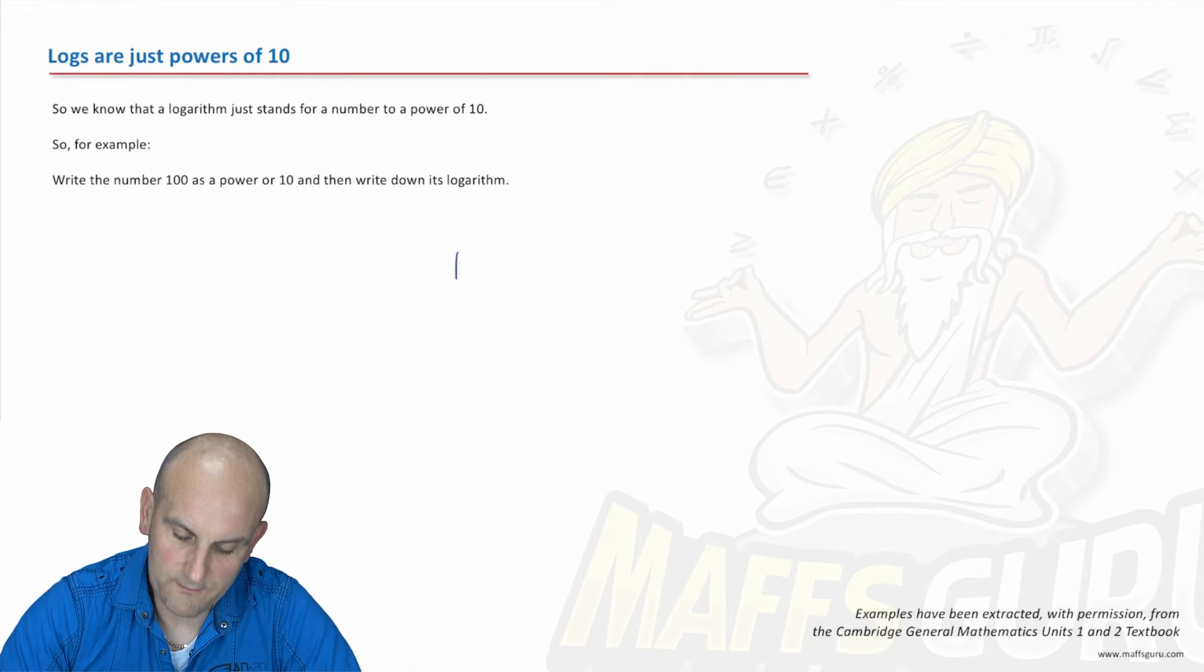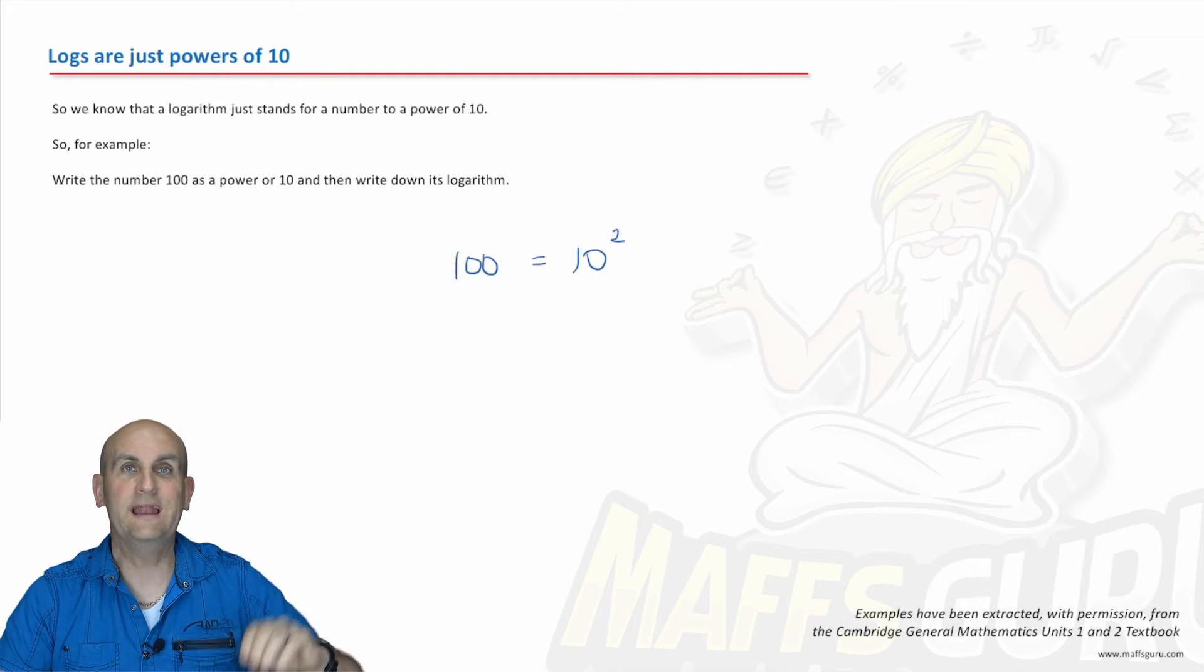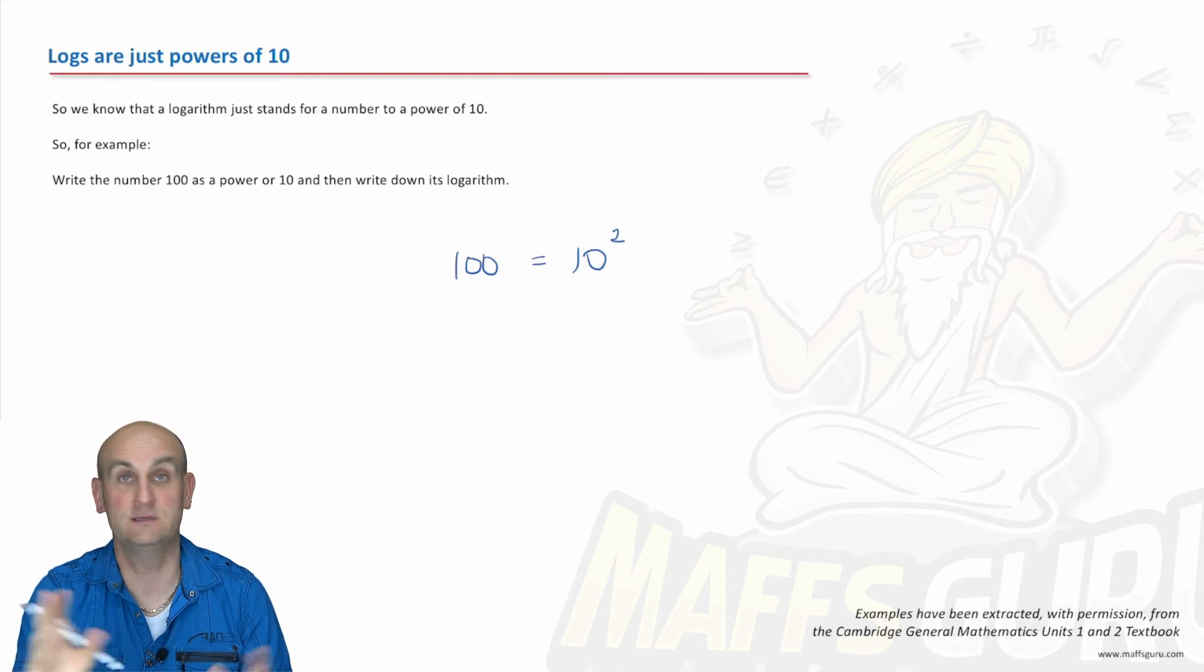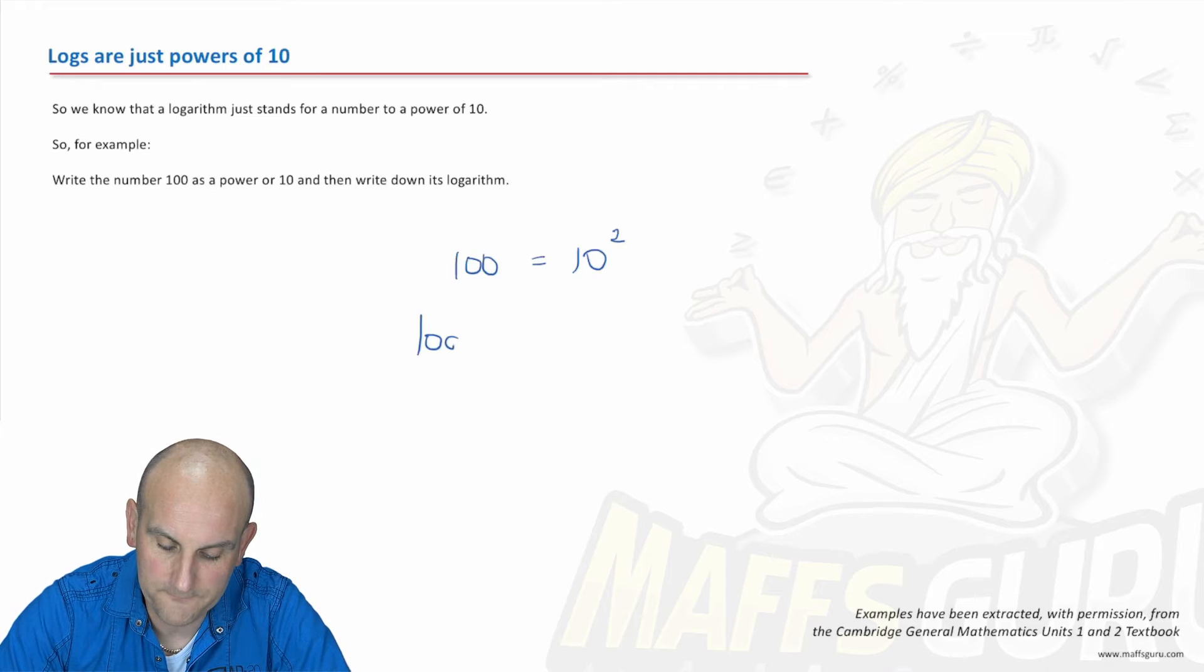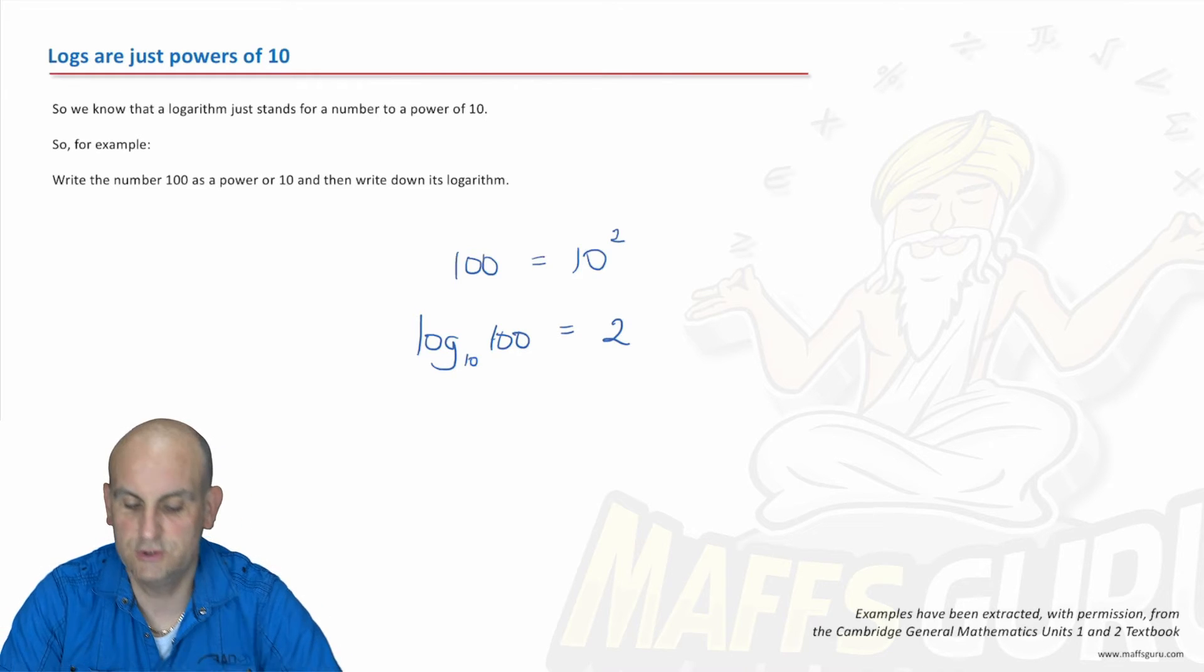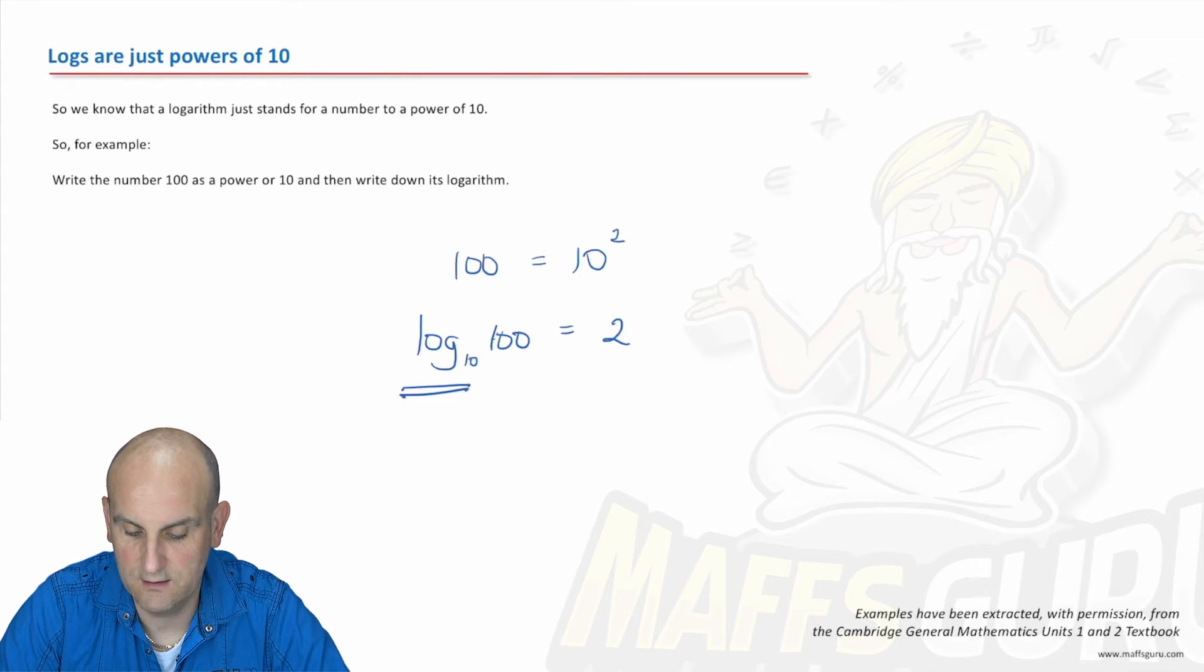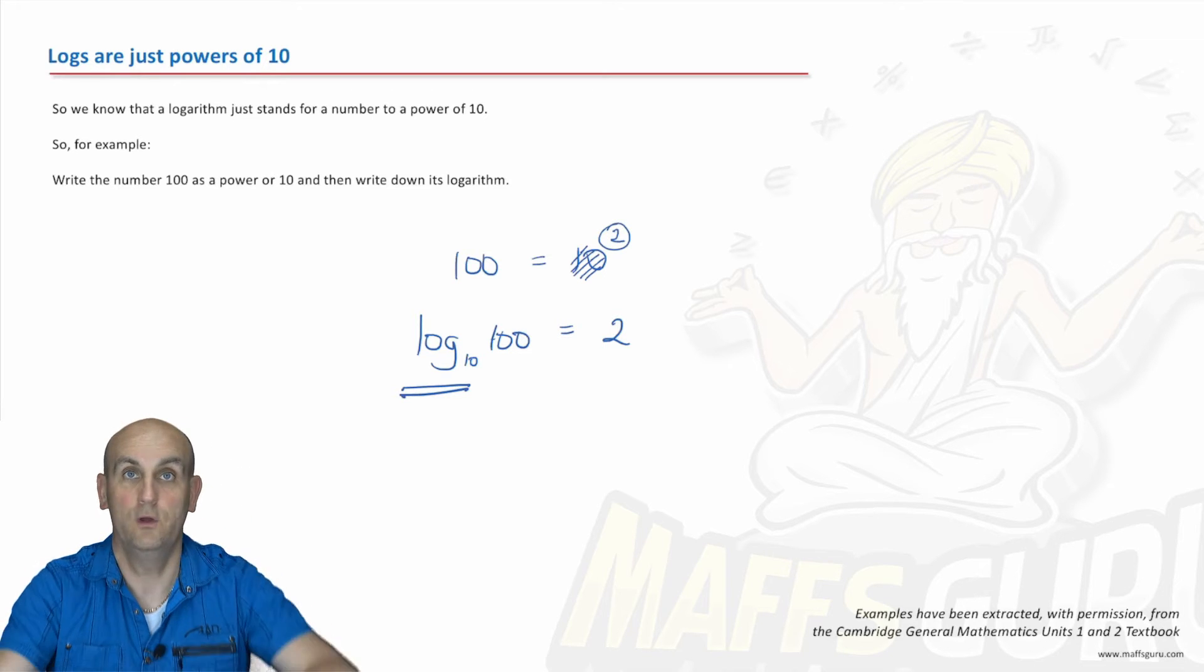So if I have the number 100, I now know that that can be written as 10 to the power of 2. They are equivalent. So I now need to find a way of getting rid of the 10 to the power and just writing the 2, because that's going to be what a logarithm is. Funnily enough, this is what we write. We write log with a little bottom 10 there, 100, then becomes equal to 2.